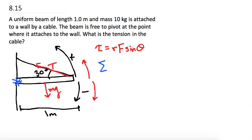So we have sum of the torque is equal to, I'm going to start with T, since it's positive. So we have the radius. So tension is acting on the beam at one meter, so its radius is one meter,